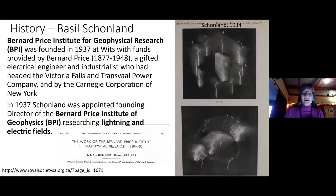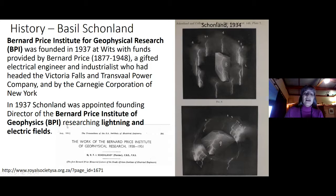There's a long history of lightning studies at Wits University. The Bernard Price Institute for Geophysical Research was actually founded in 1937 by Bernard Price who was really an electrical engineer. In 1937 Schumann was appointed as the founding director and his job was to research lightning and electric fields. These are some of the earliest lightning images ever in the world from 1934.